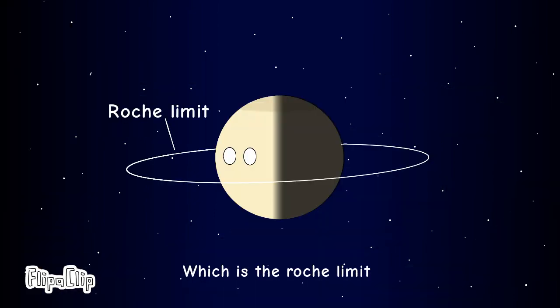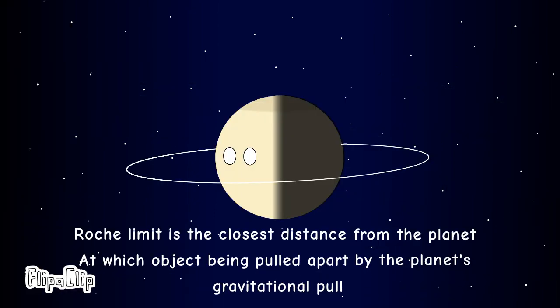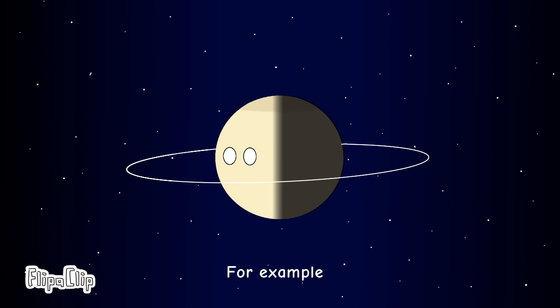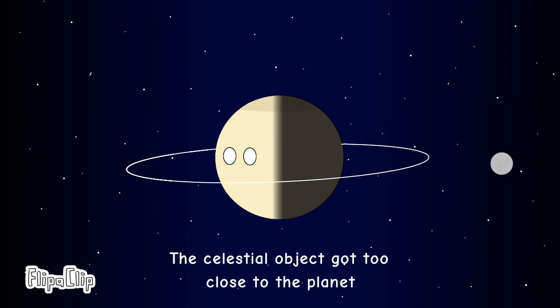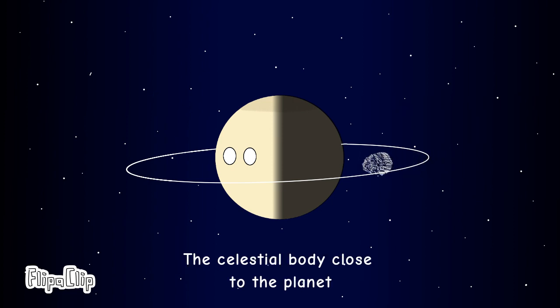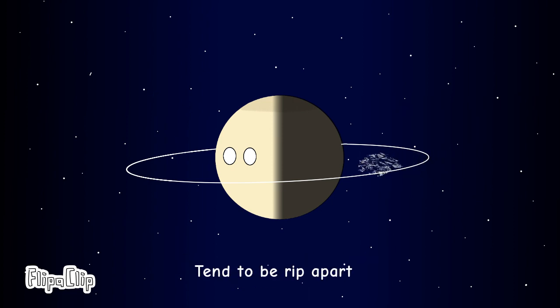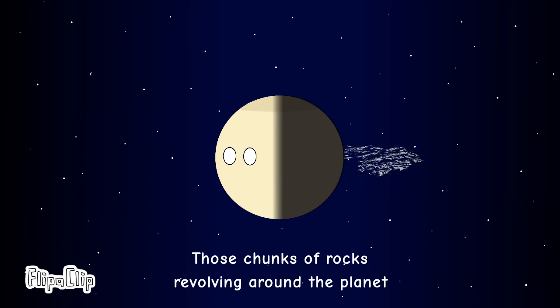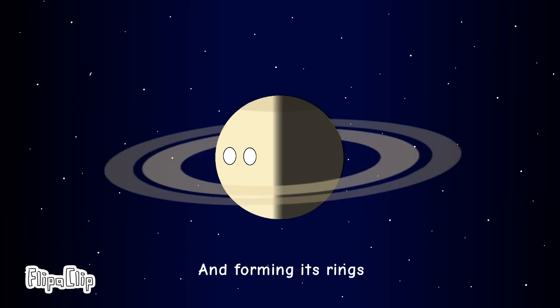Which is the Roche limit. The Roche limit is the closest distance from the planet at which an object is being pulled apart by the planet's gravitational pull. For example, if a celestial object gets too close to the planet and exceeds the Roche limit, the celestial body tends to be ripped apart, and those chunks of rocks revolve around the planet, forming its rings.